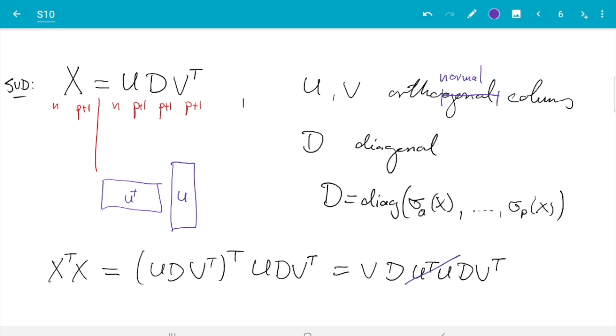What we get then is this turns into the identity matrix—the small one, p plus one times p plus one. So that's V D squared V transpose.